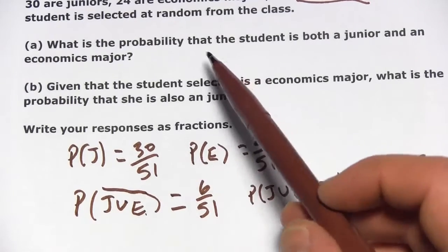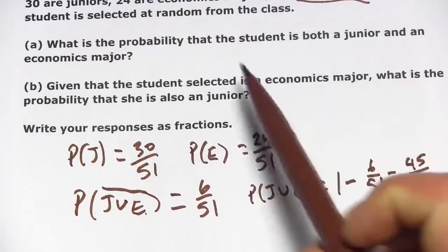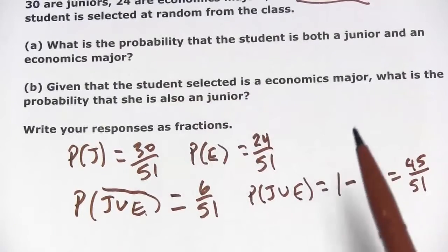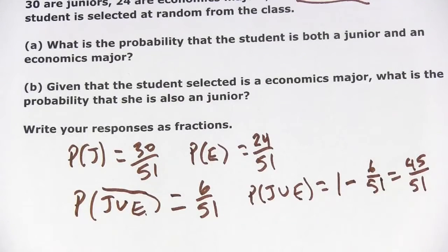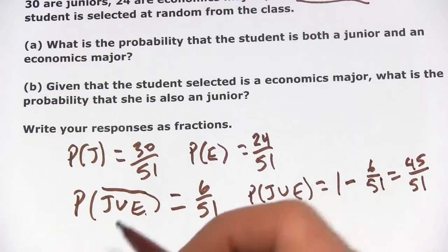Let's look at this first problem again, the A part. It says, what's the probability that the student is both a junior and an economics major? That's the intersection. For that, we're going to use that addition formula for probability.